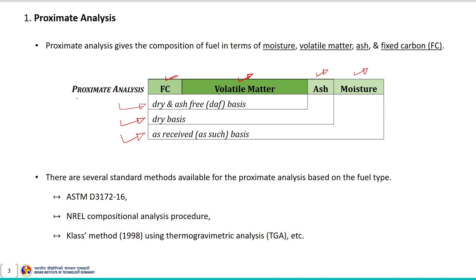Mostly we estimate the proximate analysis of a given fuel on an as-received basis to know the fixed carbon content, volatile matter, ash, and moisture content. As-received basis means the material is used for proximate analysis without any additional pretreatment or drying step. The material obtained on as-received basis is used for proximate analysis as well as to find out the composition of a given fuel.